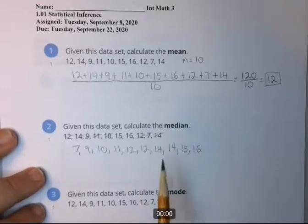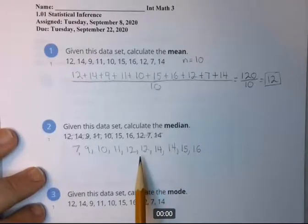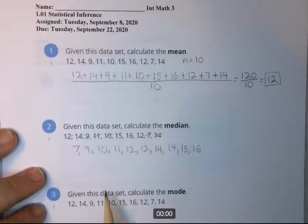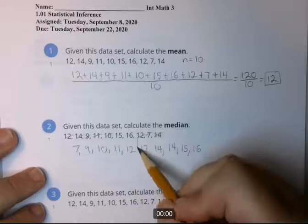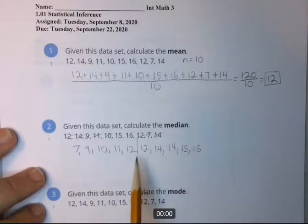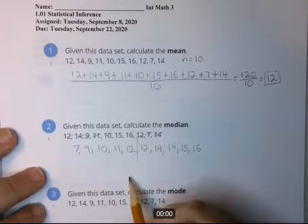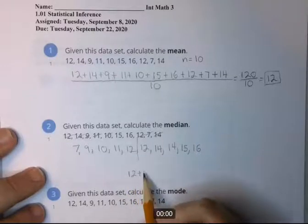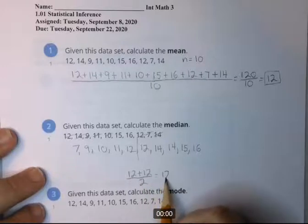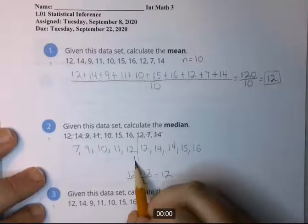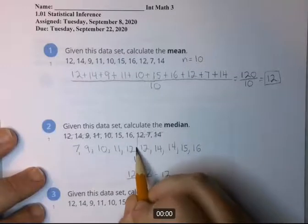Okay, the median is going to be a number that has half the values above it and half the values below it. So there are 10 numbers here, and that means they divide evenly into 5 and 5. So the median is going to have to be between these two 12s. You're going to add 12 plus 12 divided by 2 gives you 12.